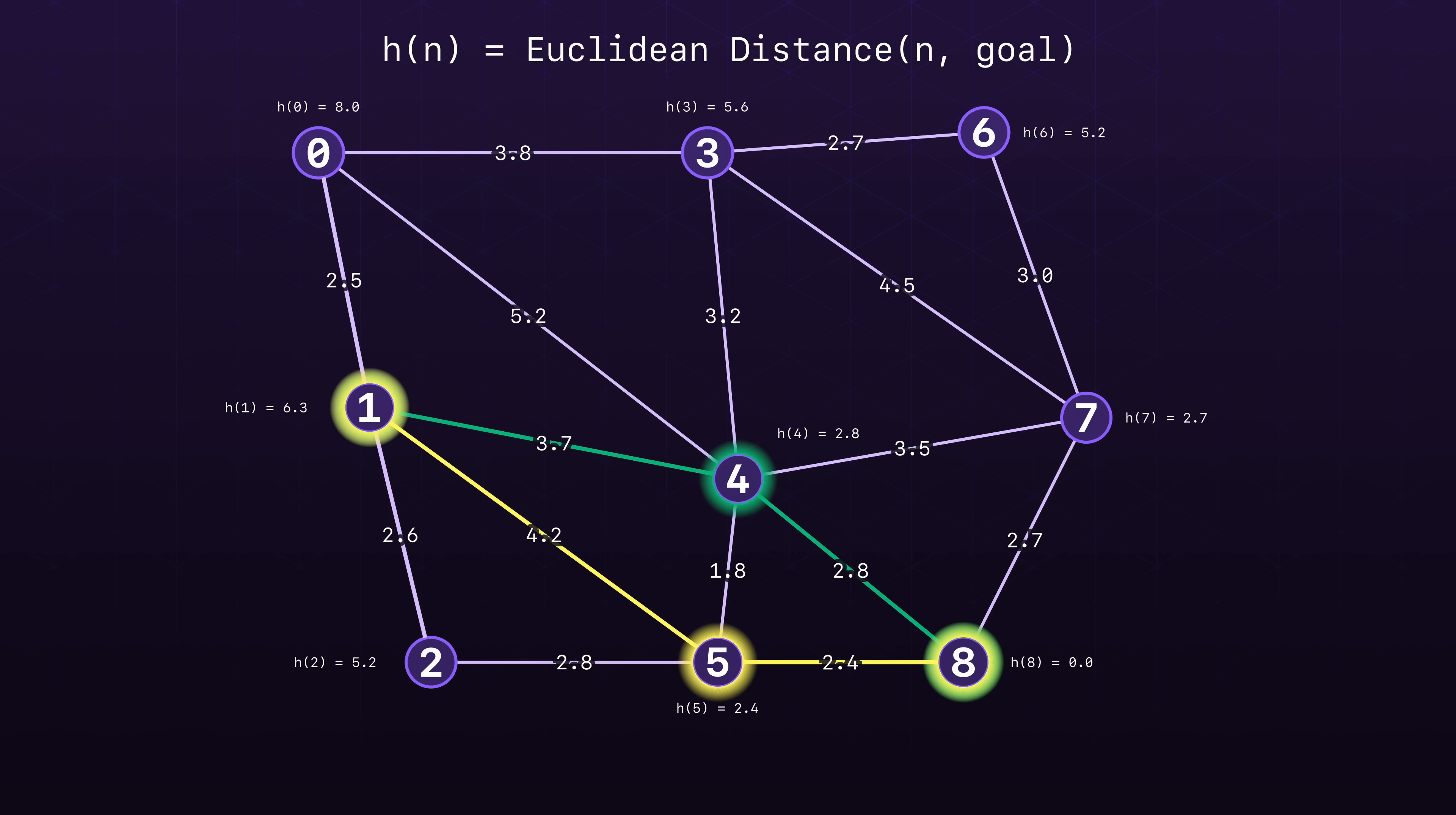The Euclidean distance, in contrast, is always an underestimate. That's by definition. The Euclidean distance is the straight line path between two nodes, and every possible graph path between two nodes is guaranteed to be at least the Euclidean distance.